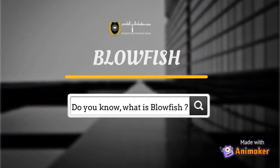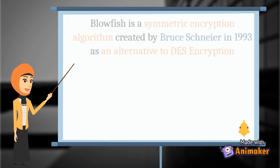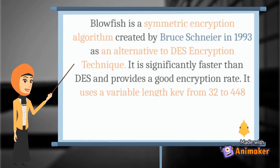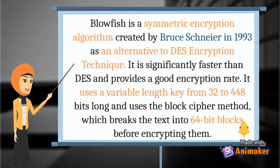What is Blowfish? Blowfish is a symmetric encryption algorithm created by Bruce Schneier in 1993 as an alternative to DES encryption. It is significantly faster than DES and provides a good encryption rate. It uses a variable-length key from 32 to 448 bits and uses the block cipher method, which breaks the text into 64-bit blocks before encrypting them.